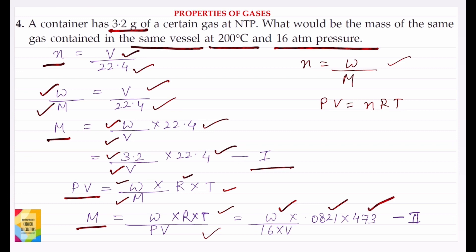Pressure is given as 16 atmospheres and let the volume be V. So this is equation number 2.